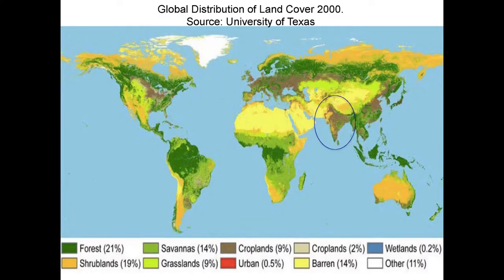Showing a significant distribution of land cover sourced from the University of Texas website — the entire South Asia has undergone massive land cover change because of agriculture, shrub lands, and cropland expansion, with significant land cover changes occurring over the last few decades.